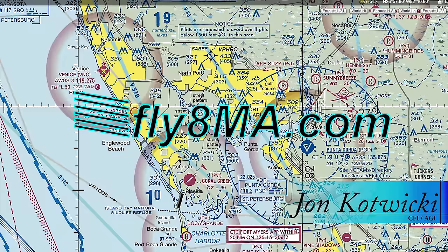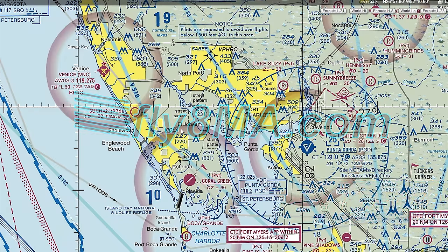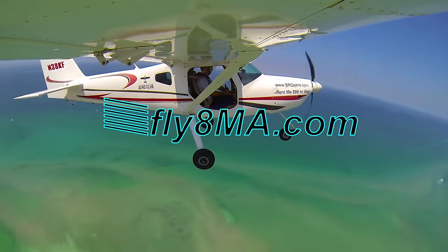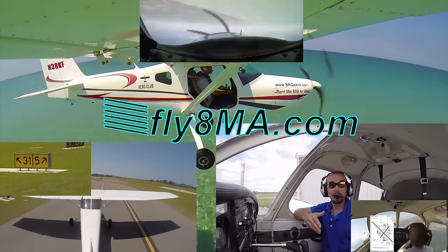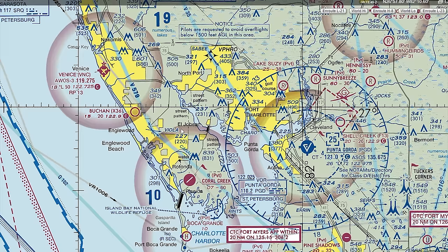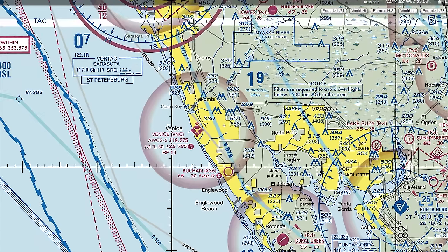Hey guys, John from Fly8MikeAlpha.com and today we're going to be going over the basics of VFR sectional charts. We have our VFR sectional chart pulled up here, looking at the Venice Airport. The first thing we notice is all these different shaded areas. Yellow means congested areas — cities with lots of buildings and homes, easy to spot at night because they're all lit up. The light greenish area is swamp land with little sprout symbols indicating marshes, and the yellow areas are built up with lots of roads and houses.